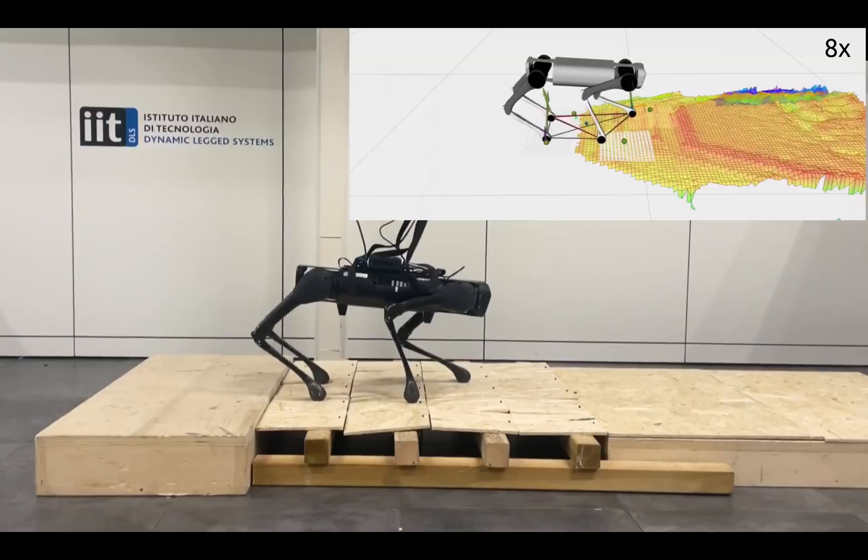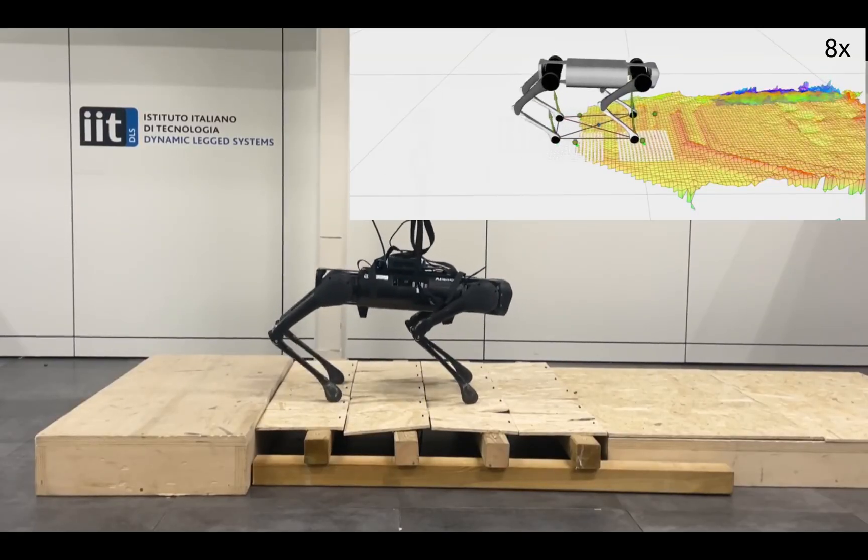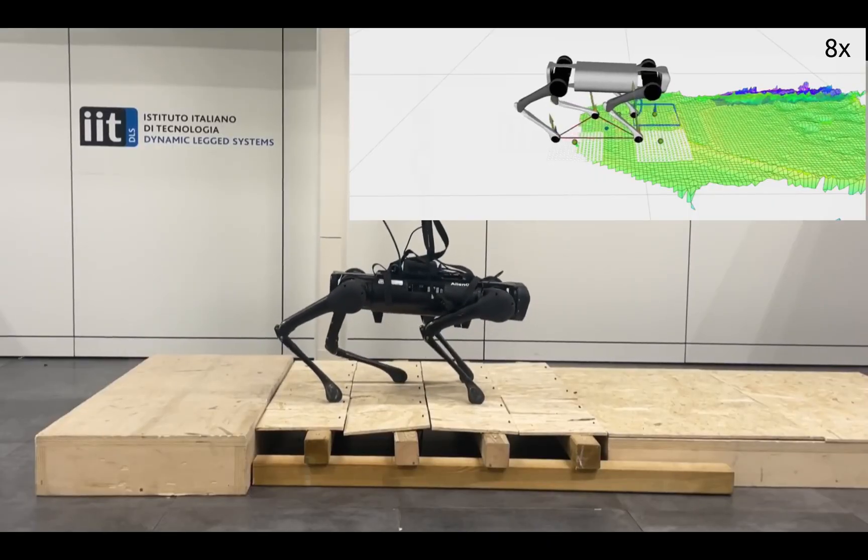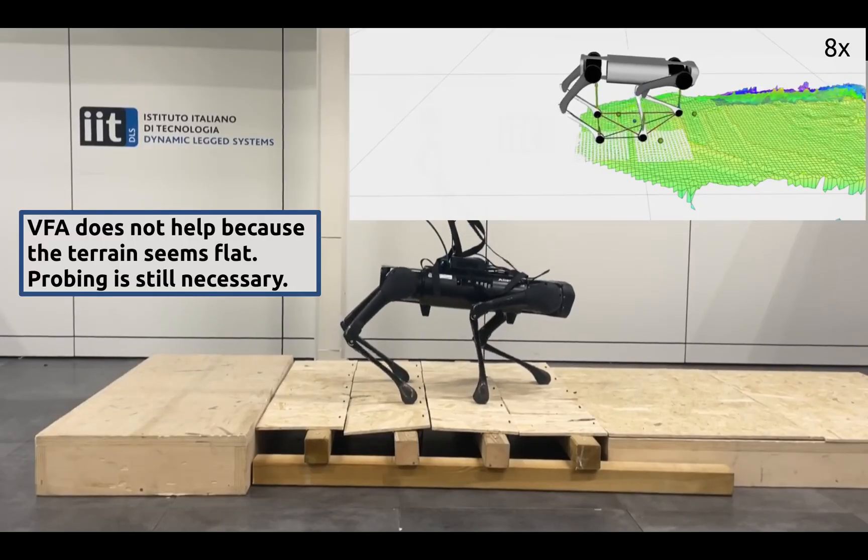The robot then continues forward over the seemingly flat terrain. In this case, vision is not helpful since the surface appears even, making probing essential to detect dangerous footholds.